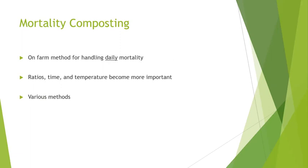Routine mortality is a natural part of raising livestock. On-farm mortality composting can be a safe and effective way to deal with normal livestock mortality. On-farm mortality composting is established to handle daily or routine mortality, but is typically not recommended or intended to process a catastrophic mortality event. A farm's mortality compost system is designed to handle an expected range of mortality load rates — exceeding that range for catastrophic events can significantly disrupt the composting process.